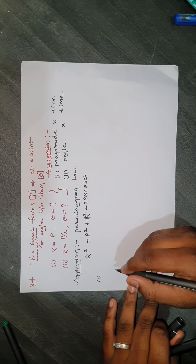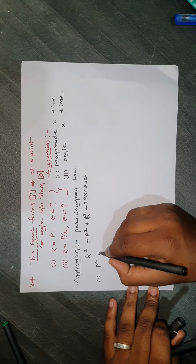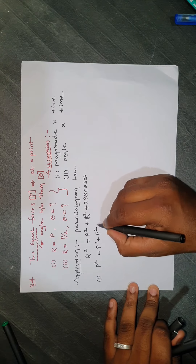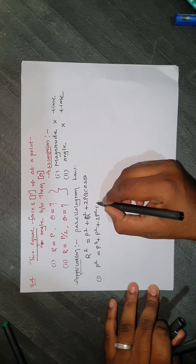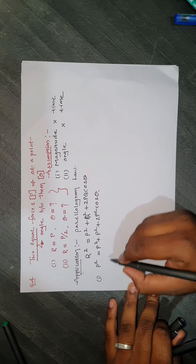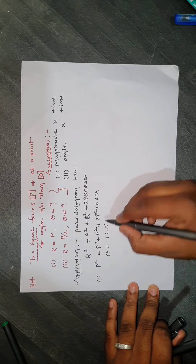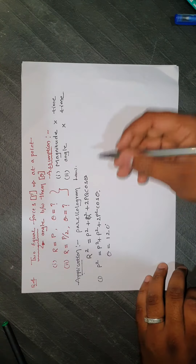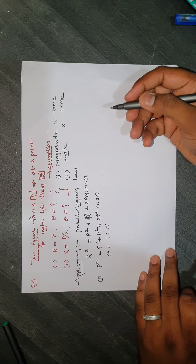For the first condition, the resultant is also P. Substituting: P² = P² + P² + 2P²cosθ. Solving this equation gives theta = 120 degrees.